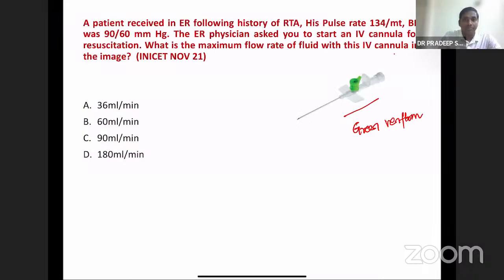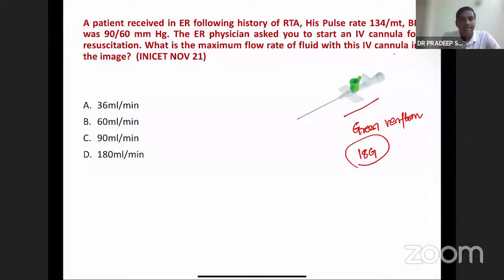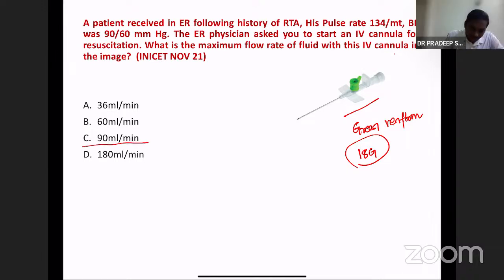When it comes to gauging measurements, 18 gauge belongs to green. You can remember: 18 is the green signal for all things in India — like for voting, marriage, or driving. For an 18-gauge cannula, the maximum flow rate is 90 ml per minute.